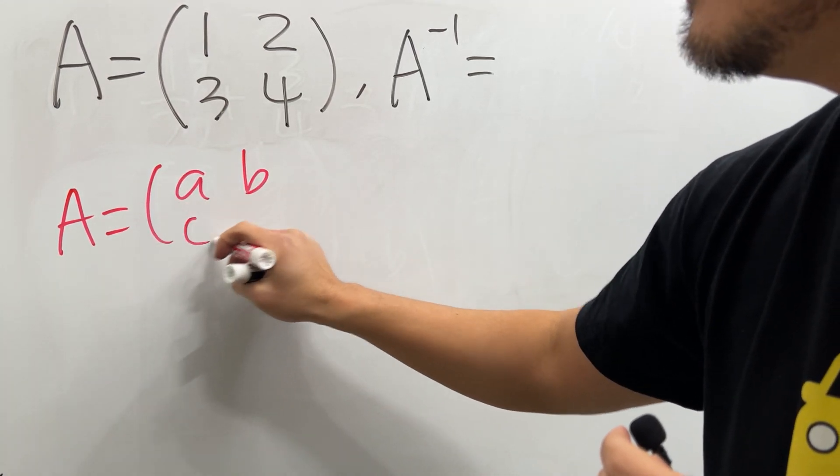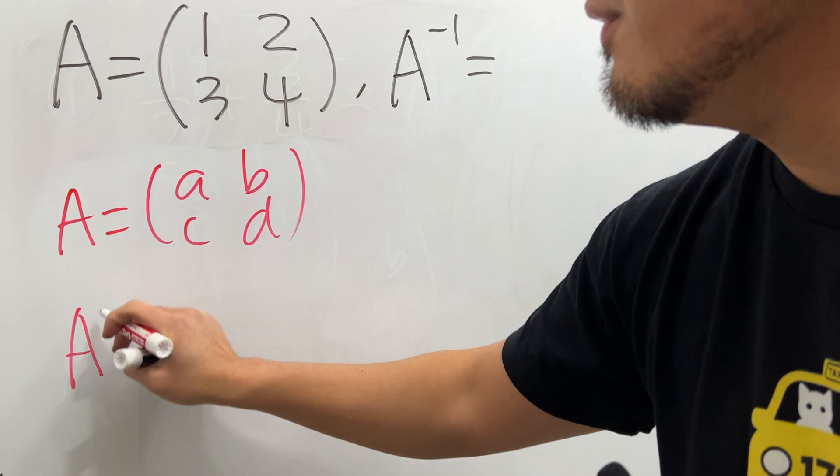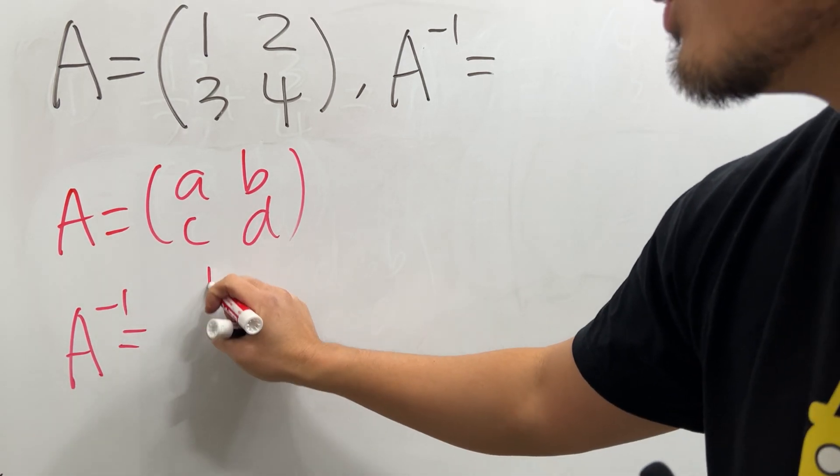Suppose we have a 2x2 matrix, A, B, C, D, like this. And for the inverse of that, it's just going to be the following. First, we do 1 over its determinant,